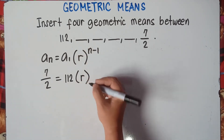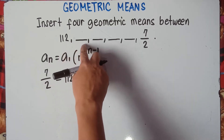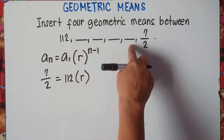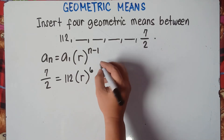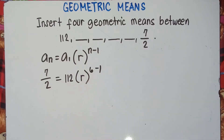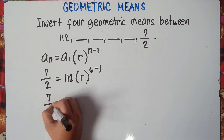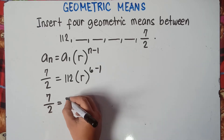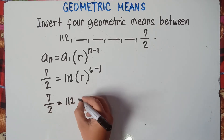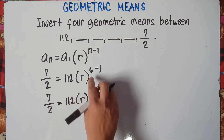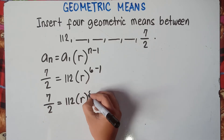We are finding the common ratio. Copy r, and our n is the number of terms — which is 6 — then minus 1. Simplify: this will be 7 over 2 equals 112 times r raised to the power of 6 minus 1, which is 5. Now we need to isolate r, so we need to remove this 112.